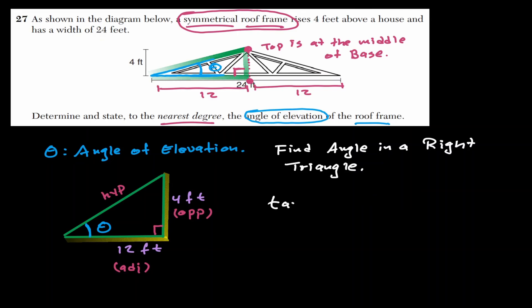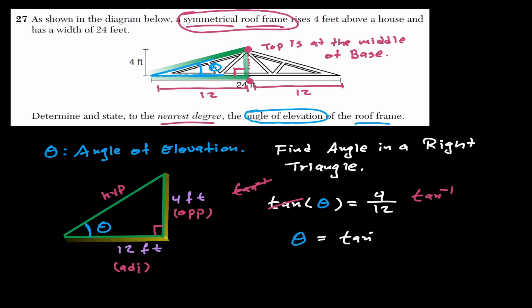The tangent of our reference angle equals opposite over adjacent, which is 4 over 12. To solve for the angle, we apply the inverse tangent to both sides. The tangent cancels out, and our reference angle equals the inverse tangent of 4 over 12. When we put this in our graphing calculator, we get approximately 18 degrees.